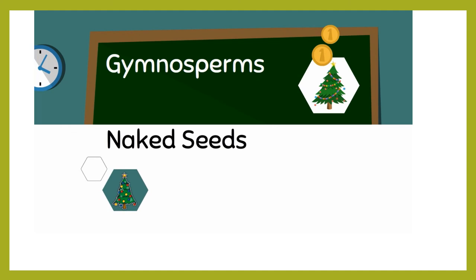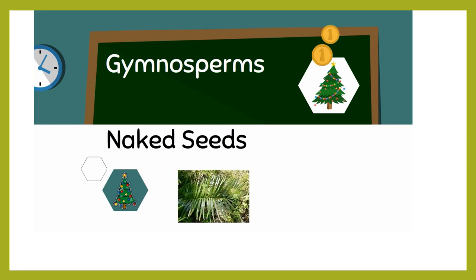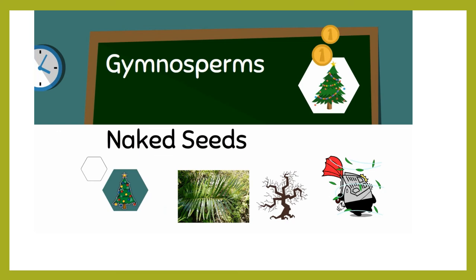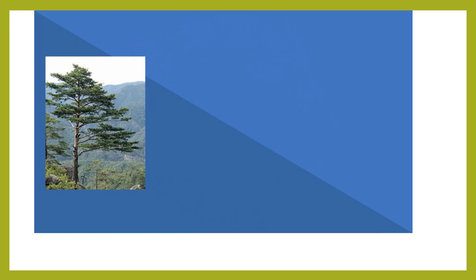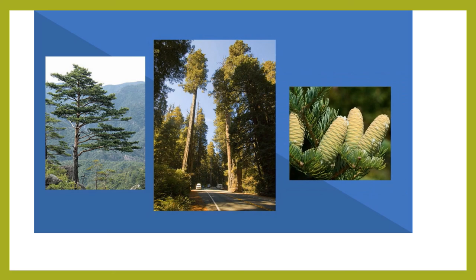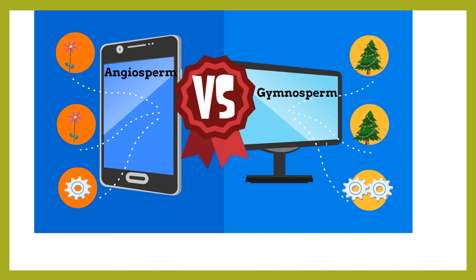Gymnosperms are plants that have a naked seed — not enclosed in a protective enclosure. Many gymnosperms have needle-like or scale-like leaves and deep-growing roots. Many gymnosperms have their seeds dispersed by the wind — the seed lands and then develops into a seedling and eventually a tree. Some common examples of gymnosperms are pine trees, redwoods, and firs. All coniferous trees are gymnosperms — coniferous trees are cone-bearing trees. That is the difference between angiosperms and gymnosperms.